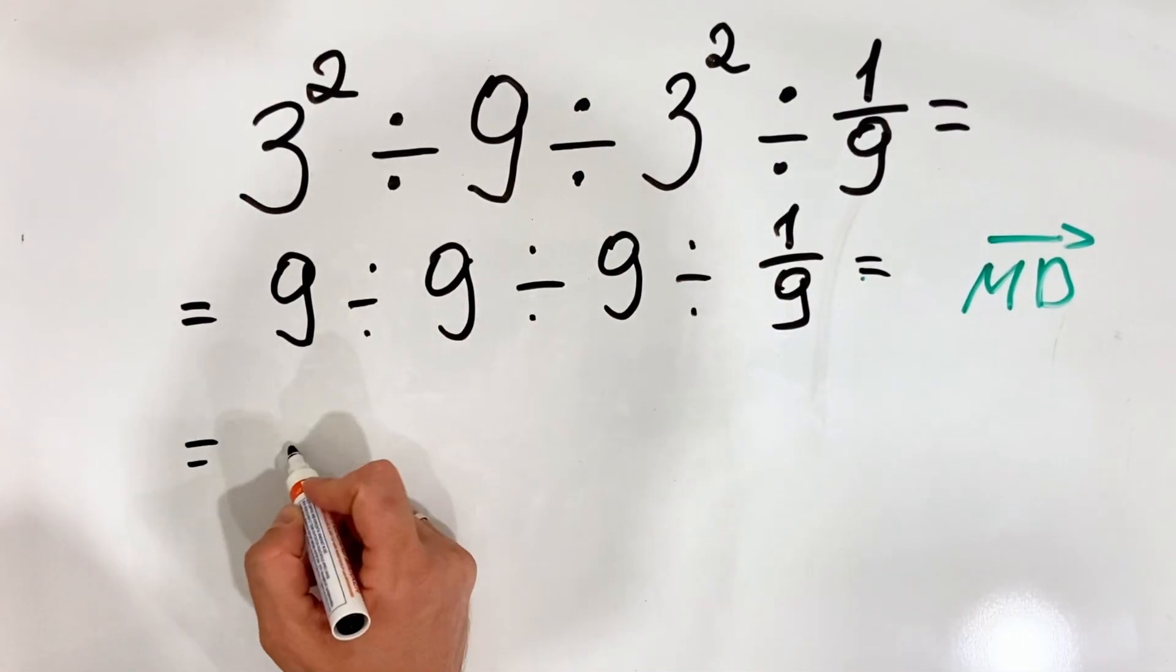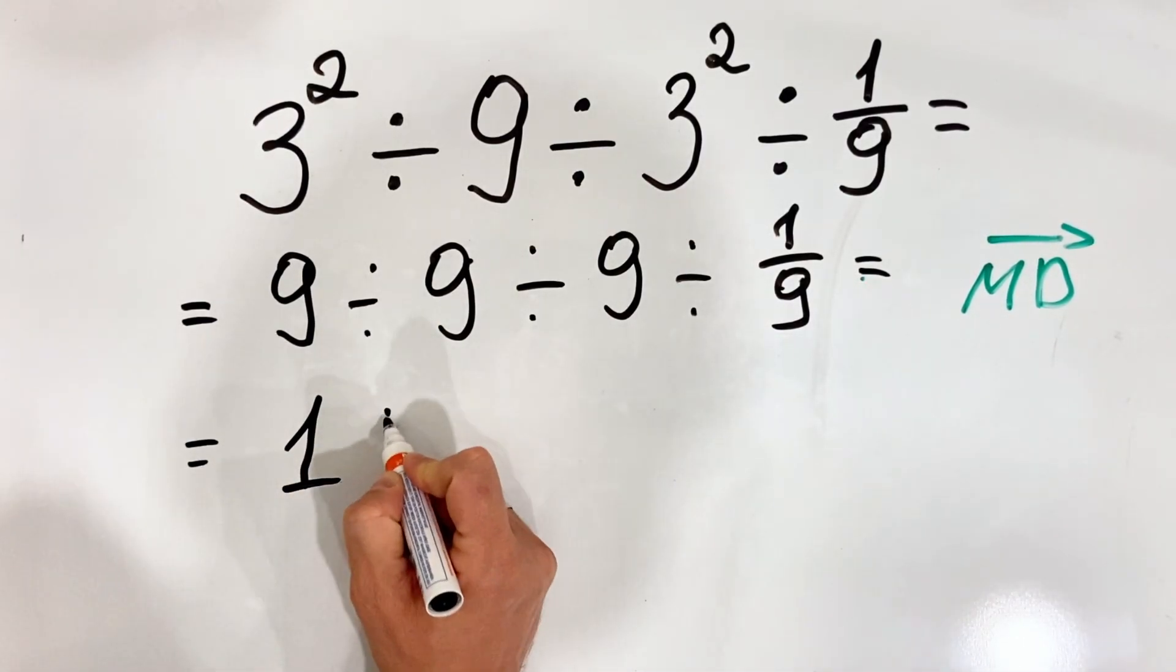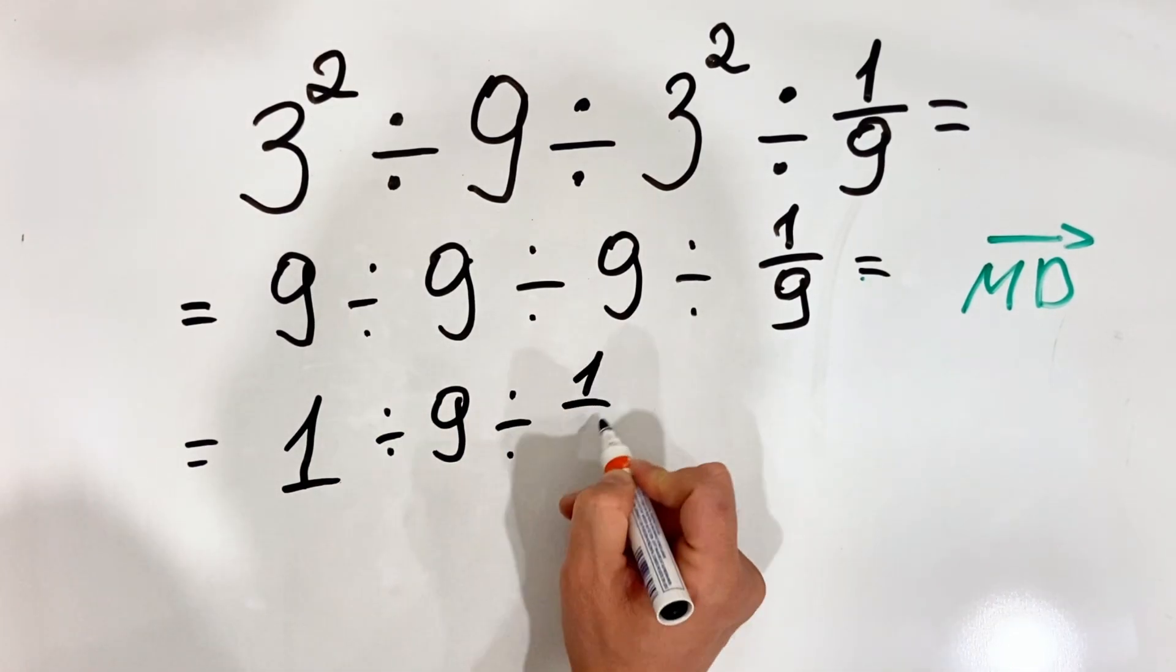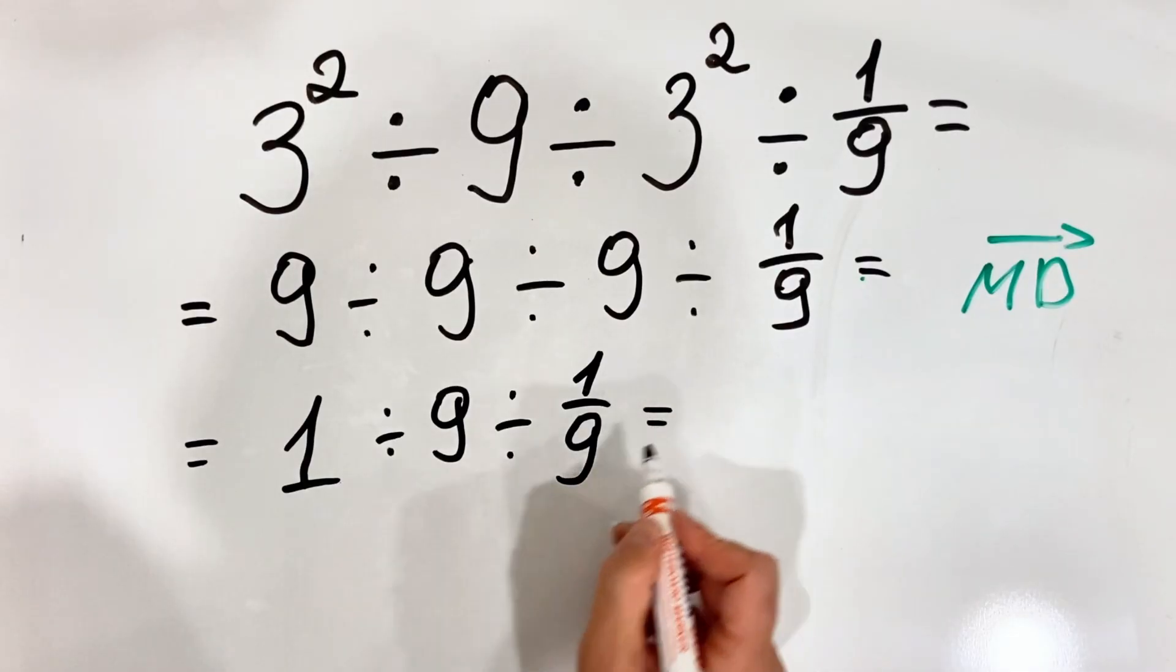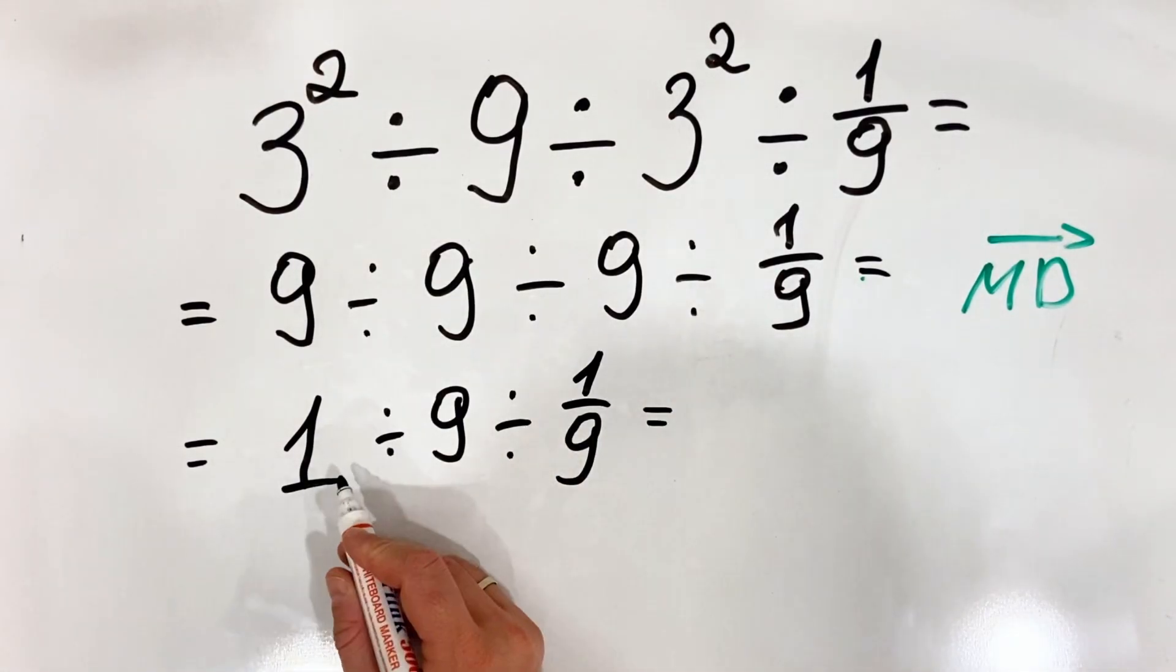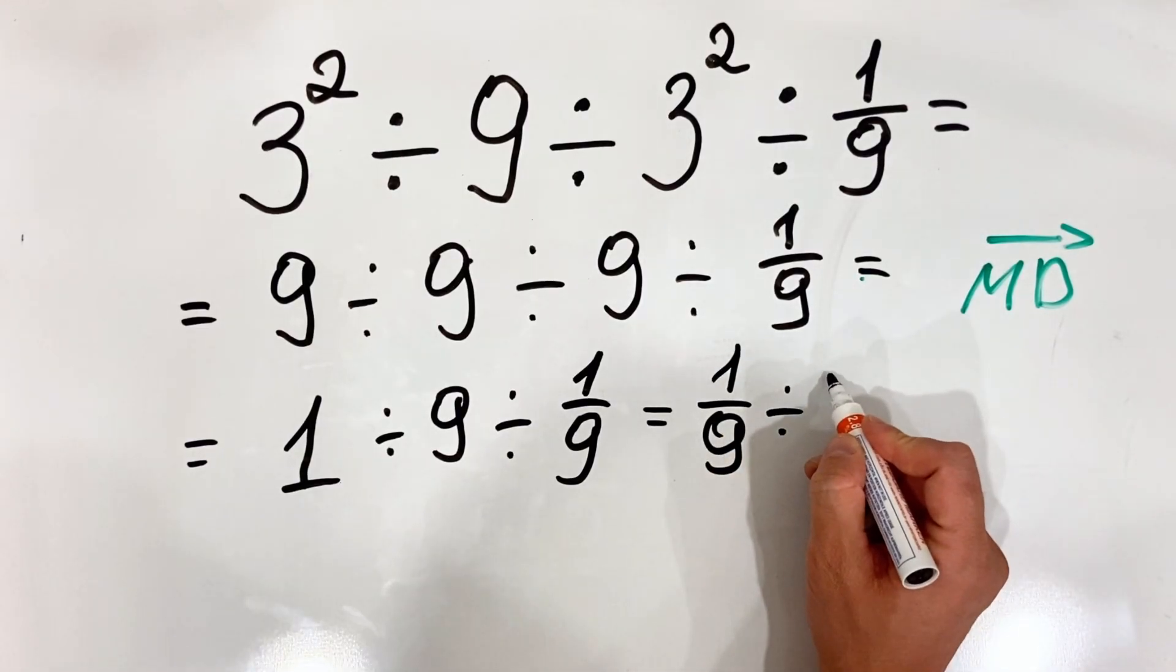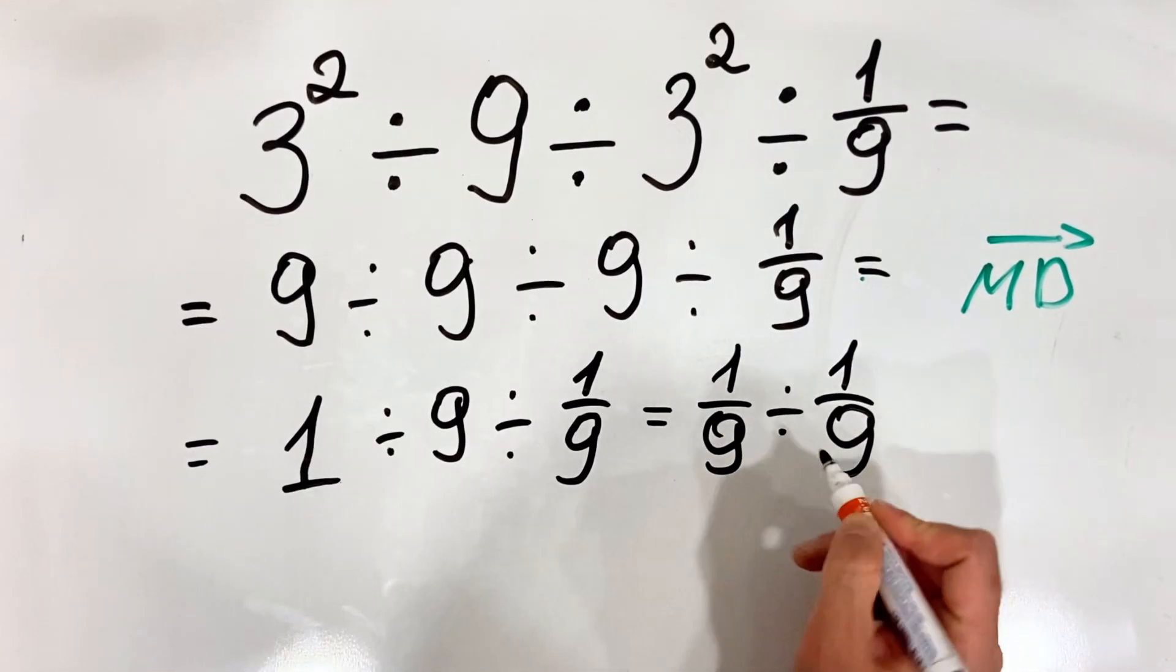Here 9 divided by 9 is 1 divided by 9 and divided by 1 over 9. So what we get is 1 divided by 9 is 1 ninth divided by 1 ninth.